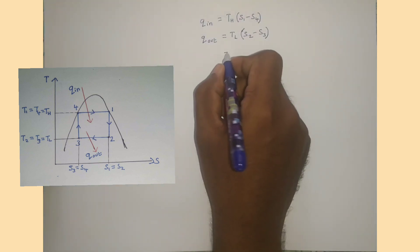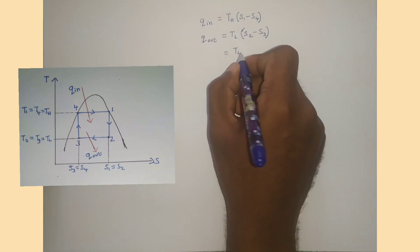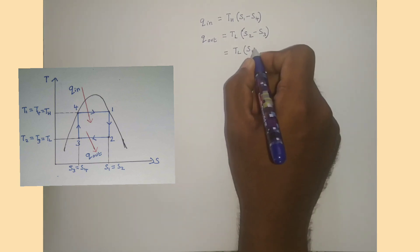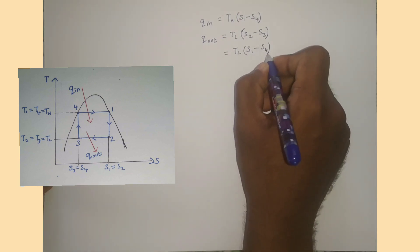But S2 equals S1 and S3 equals S4. Therefore Q out equals TL times (S1 minus S4).